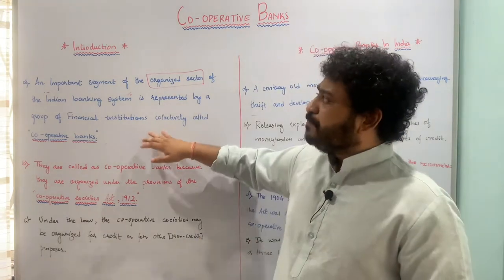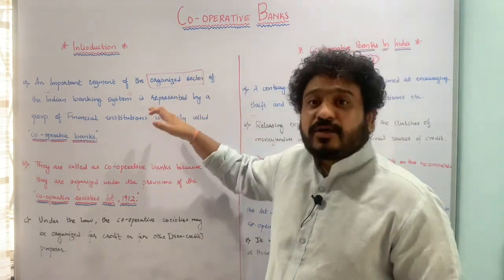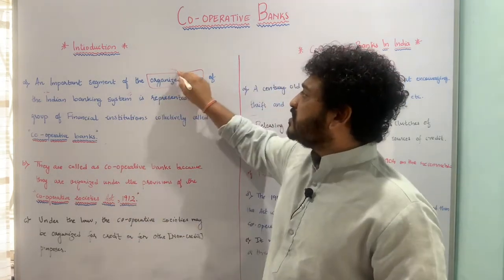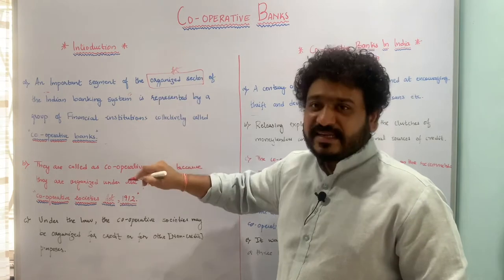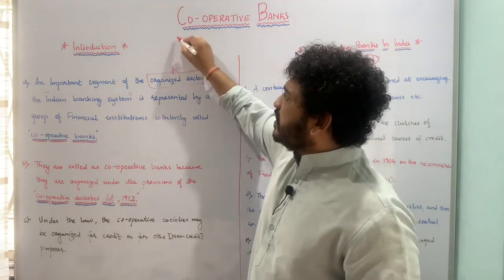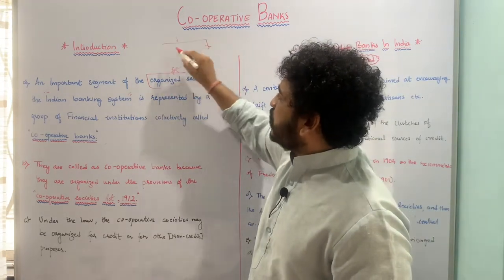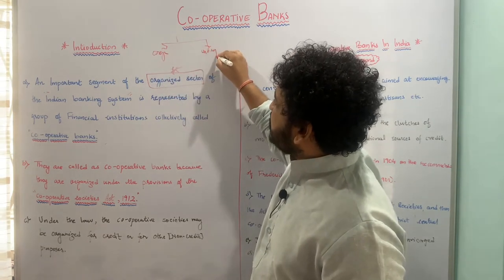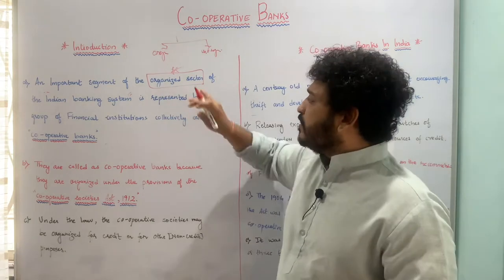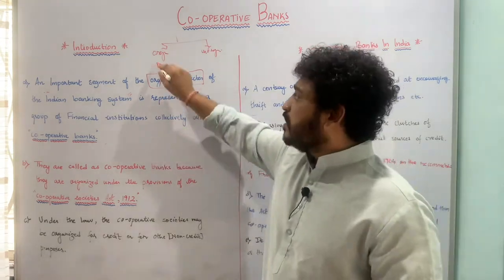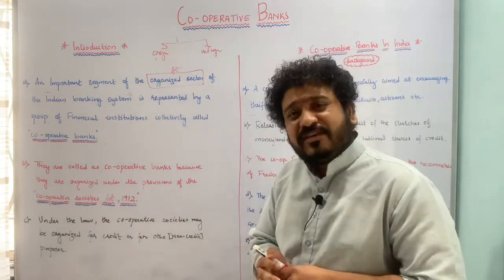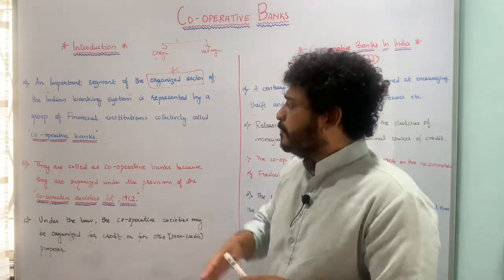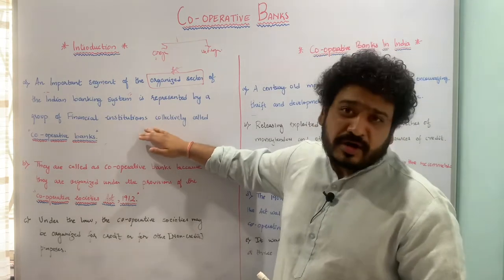Cooperative banks are a part of institutional credit and a part of the organized structure of Indian banking system. The two main broad classifications of the Indian banking system are the organized and the unorganized. Cooperative banks are part of the organized segment, alongside commercial banks in India, and therefore they deserve a lot of attention.